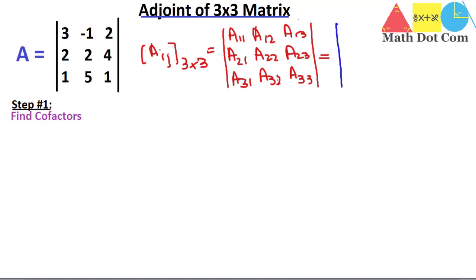Cofactors are the signed minors, so you must know the signs associated with each cofactor. The sign pattern for a 3×3 matrix is: plus, minus, plus in the first row; minus, plus, minus in the second row; and plus, minus, plus in the third row. For a 4×4 matrix, this pattern continues by adding one more row and column on the sides.